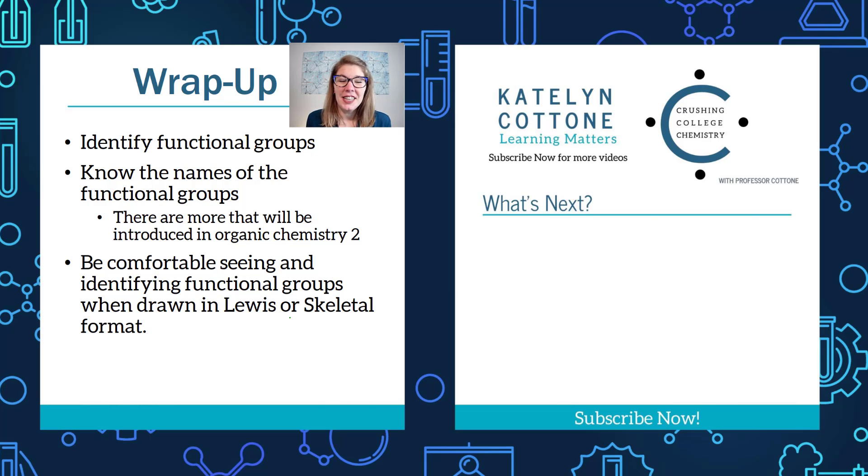Let's wrap up. That was a nice short introduction to functional groups. What you want to be able to do right now is look at a structure and figure out what the functional groups are in that structure. And yes, there can be more than one. You want to be able to point out functional groups no matter if you are in Lewis notation, so Lewis structures, or if you're in skeletal or bond line notation.